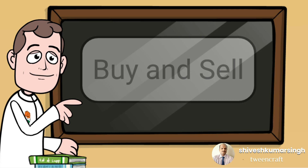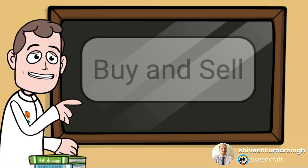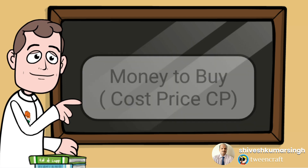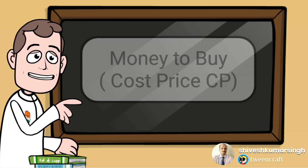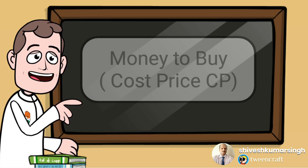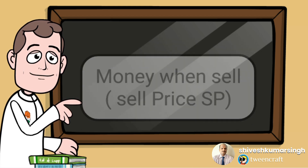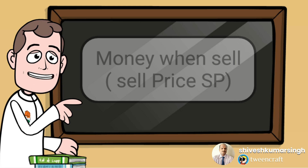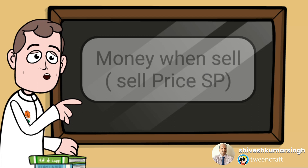So, to understand this chapter — profit and loss — just assume that you are the shopkeeper. Means, you buy something from somewhere and then you sell it. So when you buy something, whatever money you pay is called cost price, written in short as CP. And when you get money after selling that product, that is called sale price, written in short as SP.